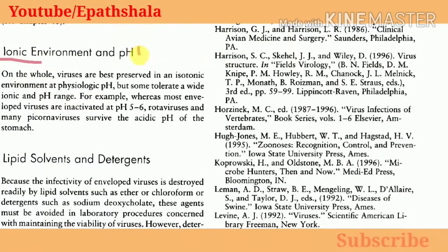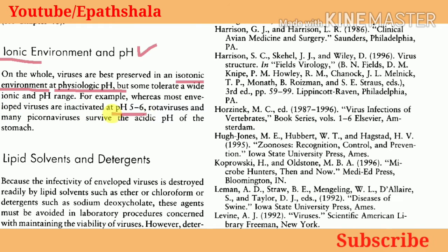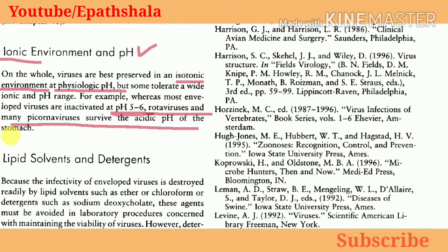Ionic environment and pH. On the whole, viruses are best preserved in an isotonic environment at a physiological pH, but some tolerate a wide ionic and pH range. For example, whereas most enveloped viruses are inactivated at pH 5 to 6, rotaviruses and many picornaviruses survive the acidic pH of the stomach.